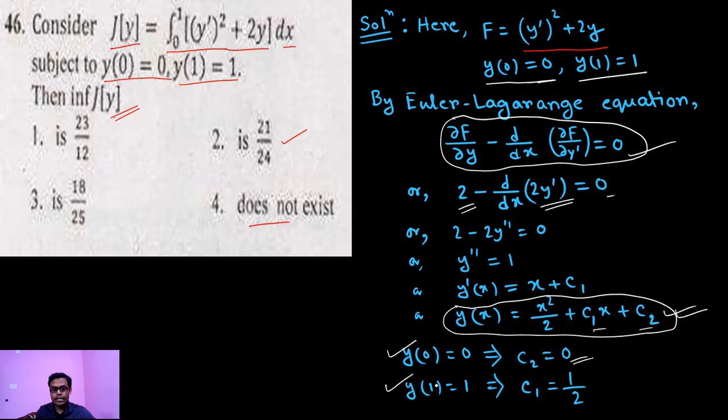And the second boundary condition is y(1) equals to 1. If we put x equals to 1, then we are getting c₁ equals to half.